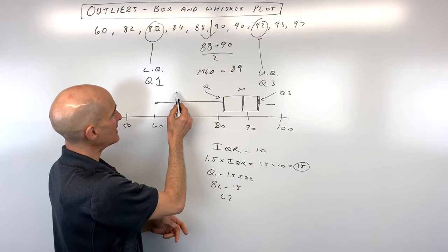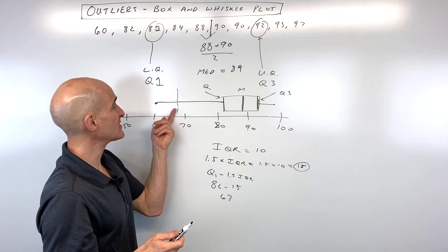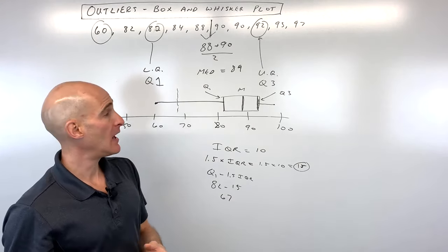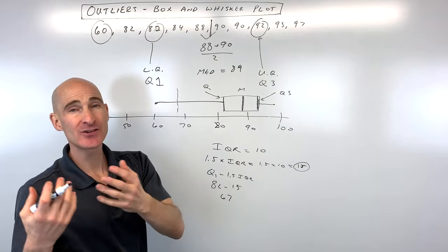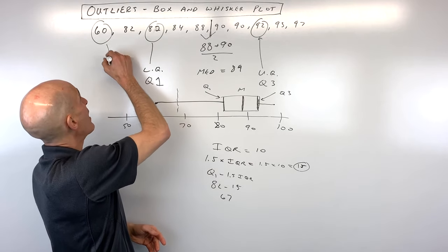So what we have to do is we have to ask ourselves, are there any data points that are lower or further to the left than 67? And here you can see that 60 is lower. So we have at least one data point here that's considered an outlier according to this definition.